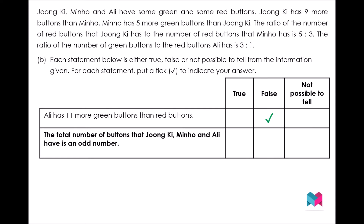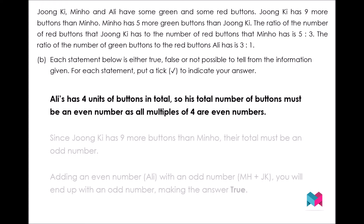Now let's evaluate the second statement: the total number of buttons that Jungki, Minho and Ali have is an odd number. From the ratio 3 to 1 and the model drawn in the previous slide, Ali's total number of buttons is represented by 4 units. So the total number of buttons Ali has must be an even number, because no matter whether one unit is odd or even, when multiplied by the even number 4, it will definitely become an even number. Any whole number multiplied by an even number always gives an even number.